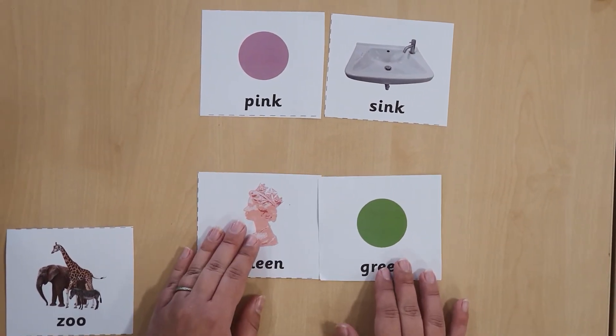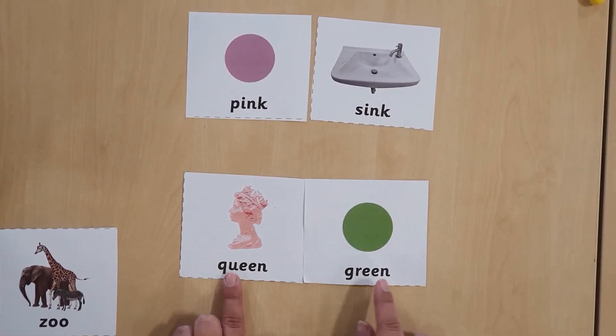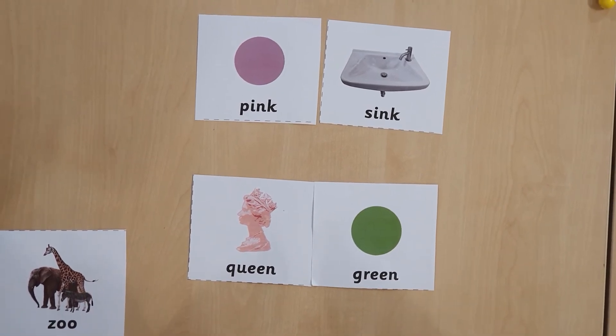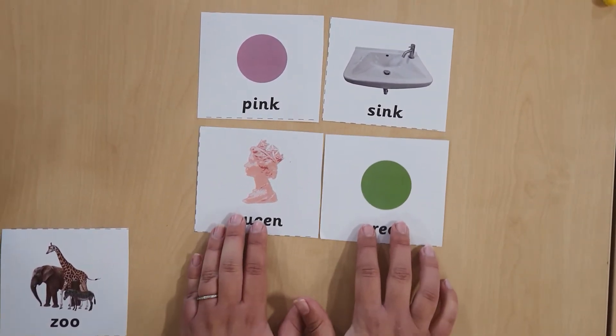What about this one? What is that? It's a queen. Queen, green. Can you see the sound that is the same? Yes, that's right. It's the E sound. We've got another match.